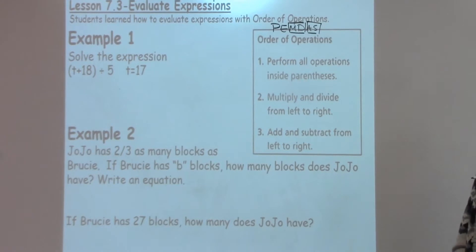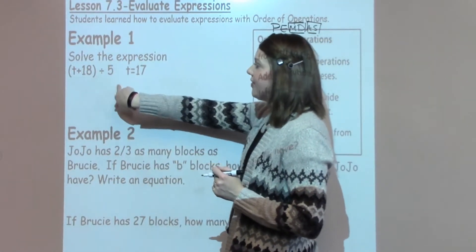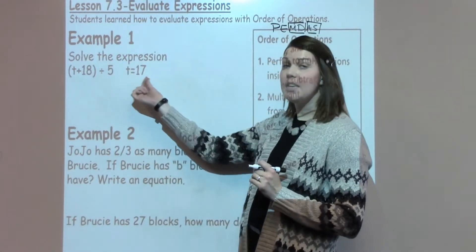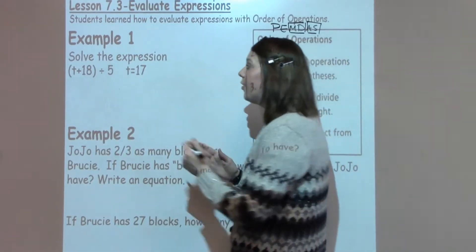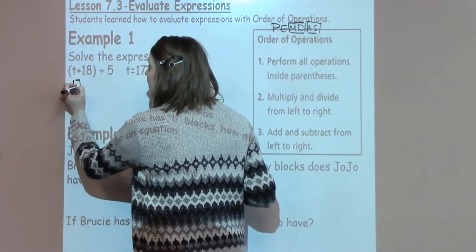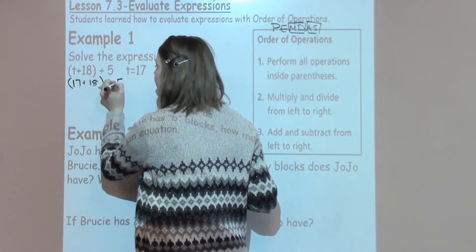Looking at example 1, I want to solve this expression. I've got t plus 18 divided by 5, with t equals 17. So I'm going to go ahead and plug in this t value, which I already know. So I'm going to write 17 plus 18, all in parentheses, divided by 5.